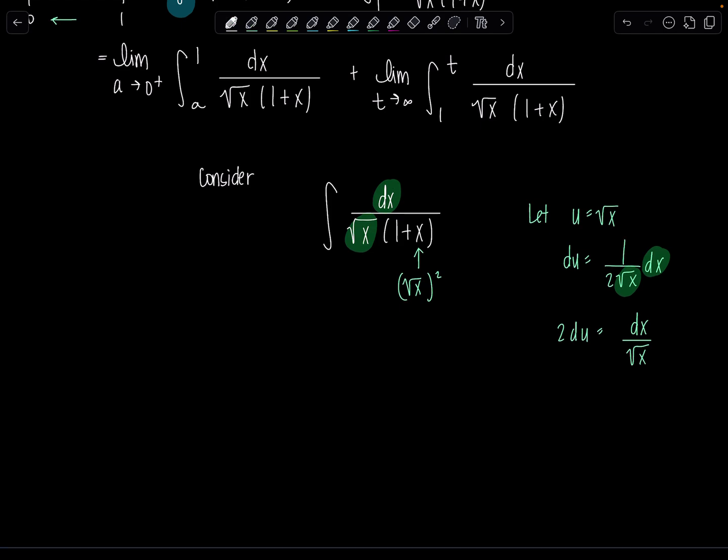So then this integral can be rewritten as two du over one plus U squared, very good. We know that antiderivative, two tan inverse of U plus C. Put plus C because this one's indefinite.